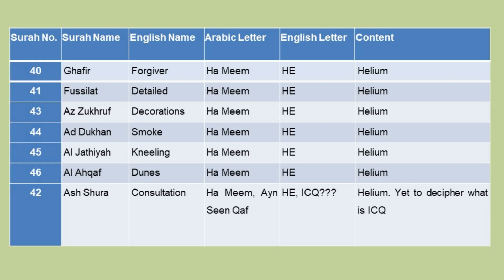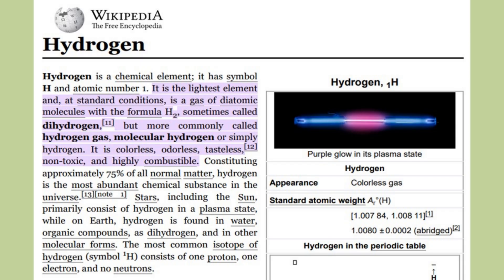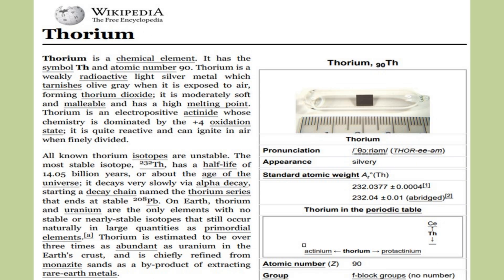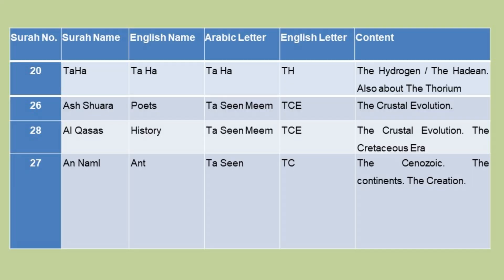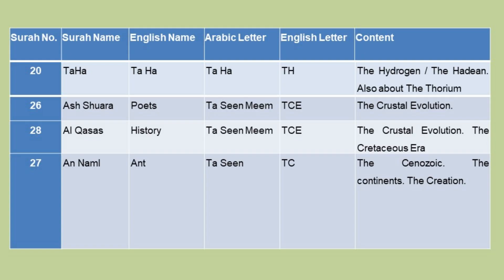Chapter 42 — Ha Mim Ayn — HE plus IQ. It is related to Helium, but requires further deciphering of IQ. Chapter 20 — Ta Ha — TH — the Hydrogen, also about Thorium. Chapter 26 — Ta Sin Mim — TCE — Crystal Evolution. Chapter 28 — Ta Sin Mim — TCE — Crystal Evolution, also about the Cretaceous era.